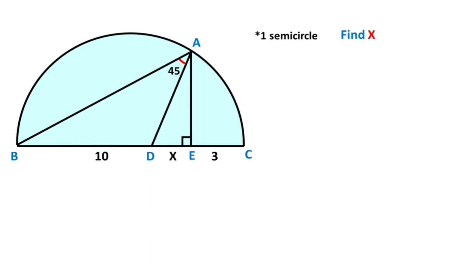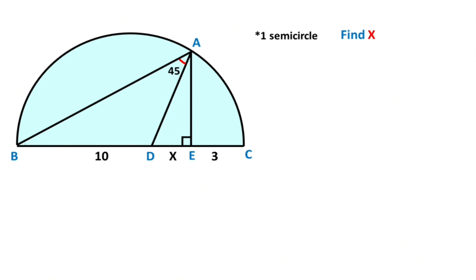Hello everyone. In this video we have one semi-circle and this length is given as 10. Here one angle is given as 45 degrees and here is given 90 degrees. The question is: what is the length of x? First step, let's call this angle alpha, so this angle here must be equal to alpha plus 45 degrees.